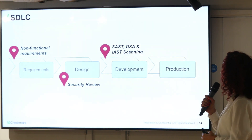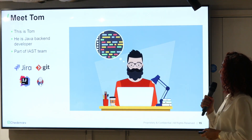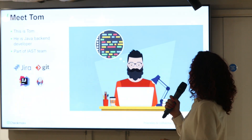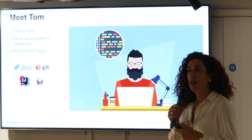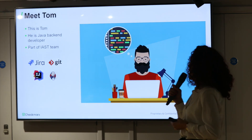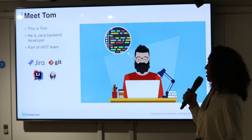At this point I would like to introduce you to Tom. Tom is a Java back-end developer and is part of the IS team. Tom manages his code in Git, his ALM is managed in Jira, and his CI is based on Jenkins. Tom likes to code — he does not like disruptions.